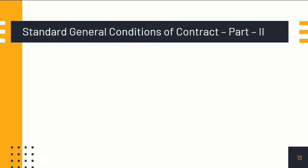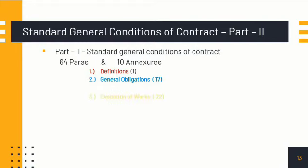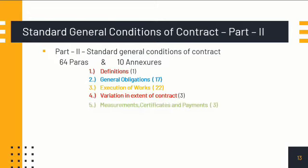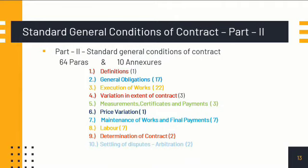Part 2 of the standard general conditions of contract consists of 64 paragraphs and 10 annexures, divided into 10 headings: Definitions (1 para), General Obligations (17 paras), Execution of Works (22 paras), Variation in Extent of Contract (3 paras), Measurements, Certificates and Payments (3 paras), Price Variation (1 para), Maintenance of Works and Final Payments (7 paras), Labour (7 paras), Determination of Contract (2 paras), and Settling of Disputes/Arbitration (2 paras) — totalling 64 paras and 10 annexures.